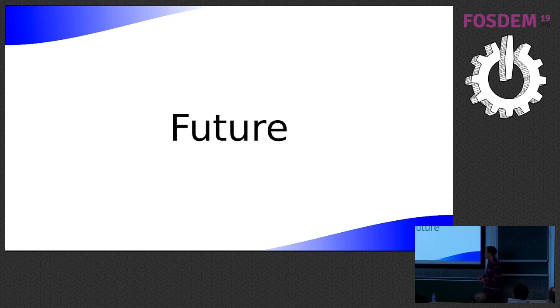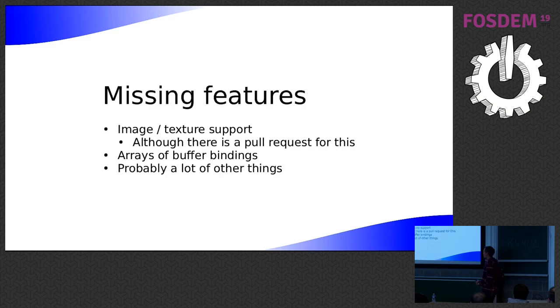So where am I hoping to go with this? So it's missing quite a few features, probably. The main one, which is quite bad, is missing image and texture support. There's a pull request for this, but I just need to review it and rebase it and make that happen. I've written arrays of buffer bindings because there's an issue open for it, but there's probably a lot of other things are missing as well.